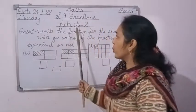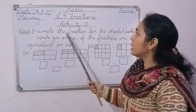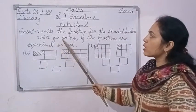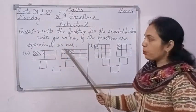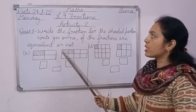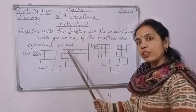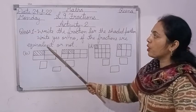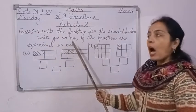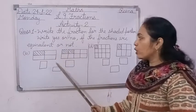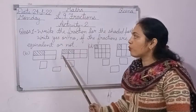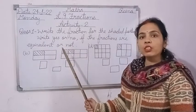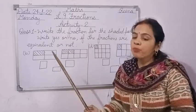In activity number two, question number one says: write the fraction for the shaded portion and write yes or no if the fractions are equivalent or not. If both fractions are not equivalent, write no; if they are equivalent, write yes.